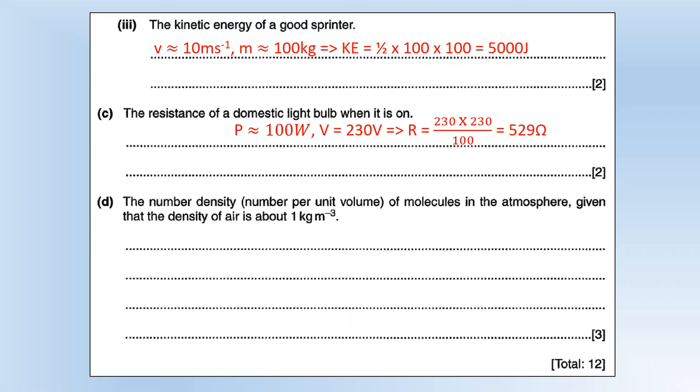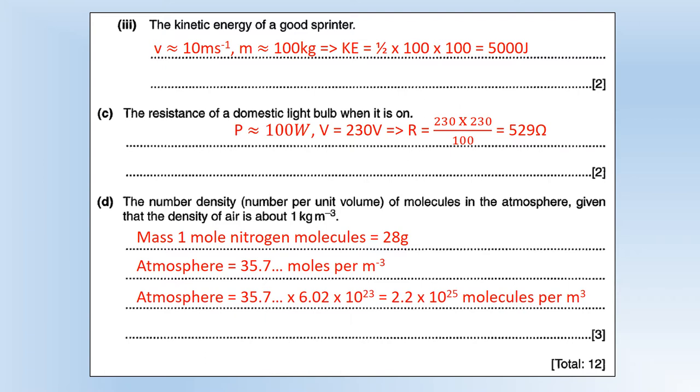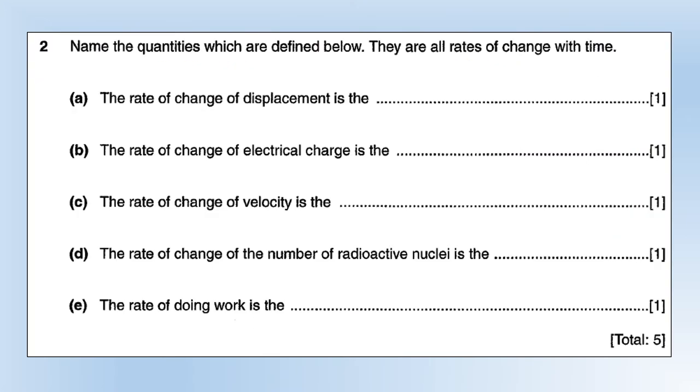The number density or the number per unit volume of molecules in the atmosphere, given that the density of air is about one kilogram per meter cubed. The first thing I did is air is 80% nitrogen, so I said let's just say it's 100% nitrogen. The mass of one mole of nitrogen molecules is 28 grams because it goes around as an N2 molecule and a nitrogen atom is 14 grams. That means the atmosphere is 35.7 moles per meter cubed by doing 1000 divided by 28, then multiplying by Avogadro's number gives us 2.2 times 10 to the 25 molecules per meter cubed as the number density.